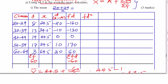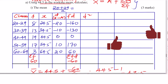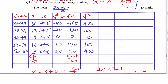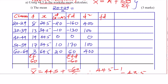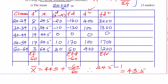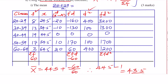We will need to square D first. D is negative 20 for the first class — square that and get 400. Negative 10 squared gives 100. 0 squared is 0. 10 squared is 100. 20 squared is 400. Then prepare the FD² column by multiplying F by D²: 8 times 400 gives 3200; 13 times 100 gives 1300; 19 times 0 gives 0; 17 times 100 gives 1700; 3 times 400 gives 1200. The summation of FD² is 3200 plus 1300 plus 0 plus 1700 plus 1200, giving 7400.